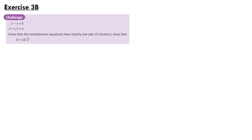A question from Exercise 3b says y minus x equals k and x squared plus y squared equals 4. Given that the simultaneous equations have exactly one pair of solutions, show that k equals plus or minus 2 root 2. The first thing we can do is think about which equation we're going to substitute into the other. It's quite clear that the first equation will be much easier to plug into the second one.